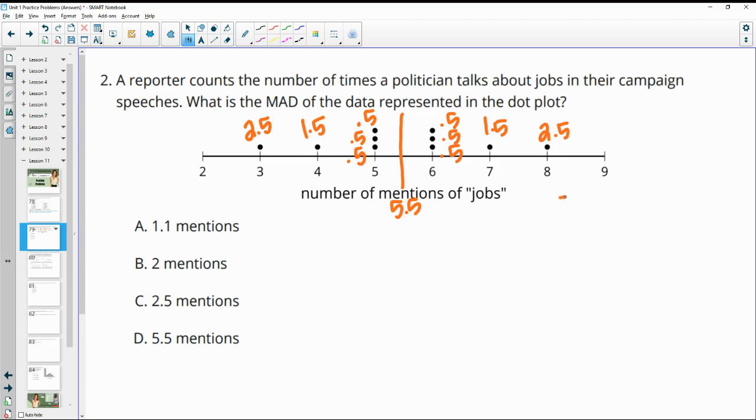So two 2.5s is 5, two 1.5s is 3, this is 1.5 and 1.5, which is 3, and then how many data points do we have here, 10? So we have 8, 11 divided by 10, which is 1.1.